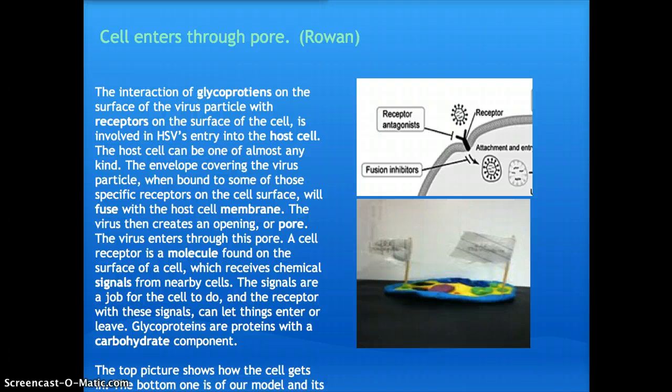The virus will create a pore, which the virus enters through. A cell receptor is a molecule found on the surface of a cell, which receives signals from nearby cells. The signals are a job for the cell to do, and the receptor with these signals can let things enter or leave.